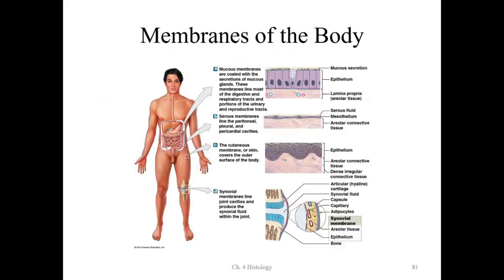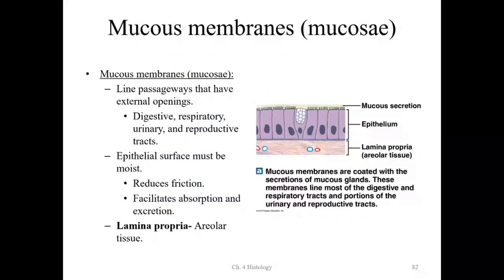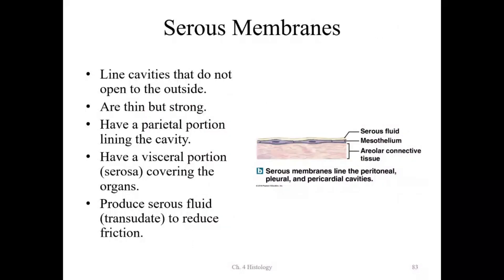Mucous membranes, sometimes called mucosa, line any opening open to the outside world — nasal mucosa, oral mucosa, and the linings of the digestive, urinary, and reproductive tracts. They must be moist to reduce friction and facilitate absorption and excretion. A lamina propria made of areolar connective tissue is associated with this membrane.